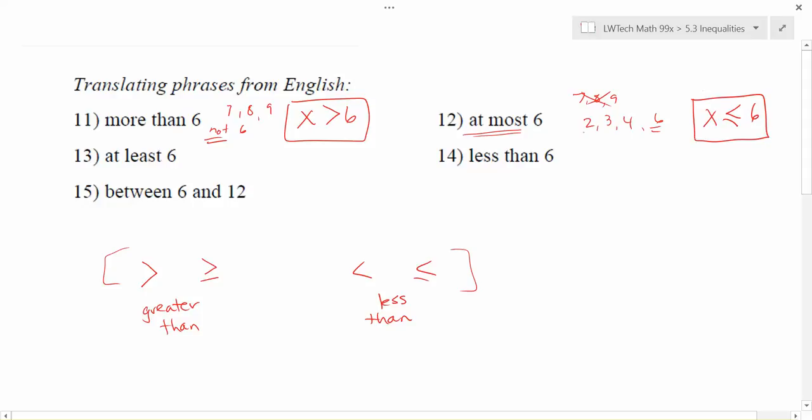Thinking about does seven apply or does two apply when I'm thinking about at most six? At most six means not seven, but two would work. And then you can kind of think about which sections of the graph to shade from there.